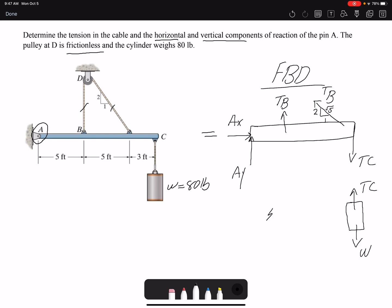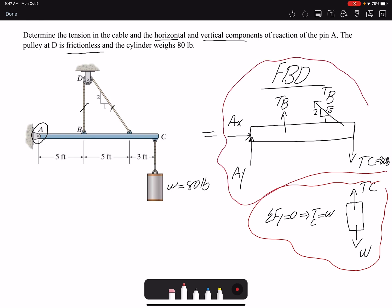So if I write summation of forces equal zero for y, that means that TC equals W equals 80 pounds. So here I have 80 pounds. I have drawn two free body diagrams: one for my beam, and one for the weight.